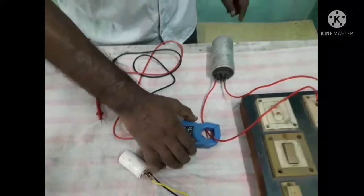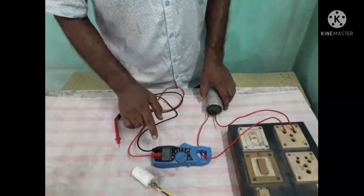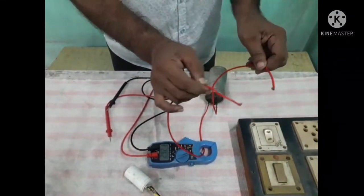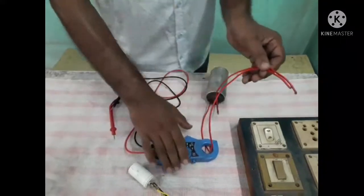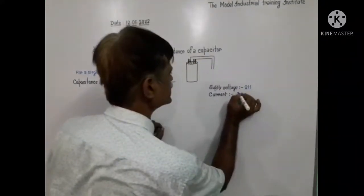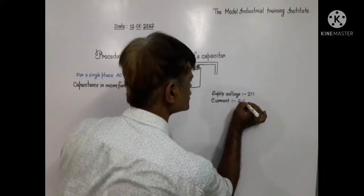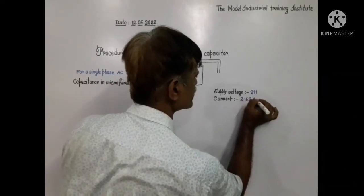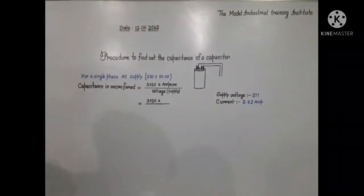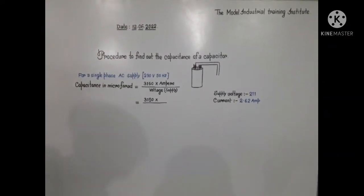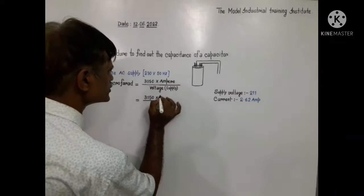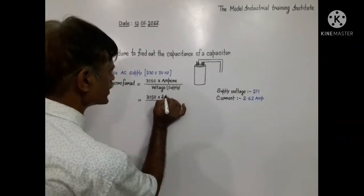Finally it is showing 6.2. Now I am discharging it. So this is the current taken, 2.62 amps. Now I am putting the data. 3150 into 2.62.